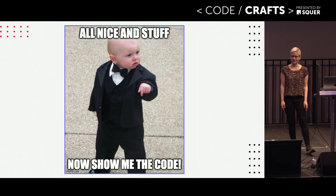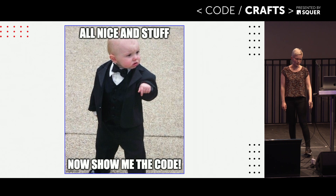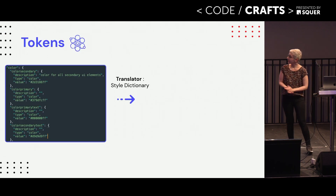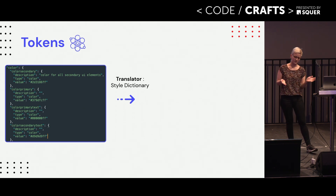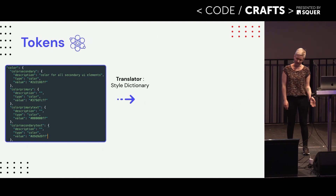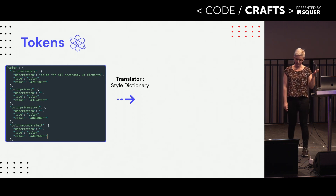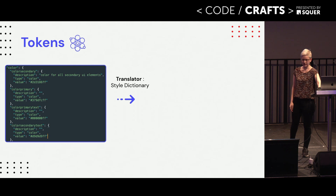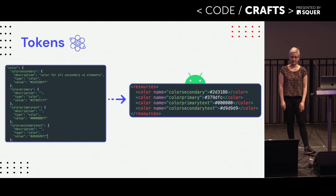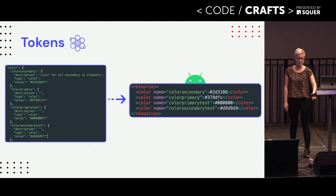I'm going to show you some code now. Just a simple JSON with some color definitions. They have a value, a name, maybe also a description. And here the style dictionary comes into play. It's our translator which can take this JSON and translate it into some platform-specific format. Like for Android, we would have our resources file with our color definitions in.